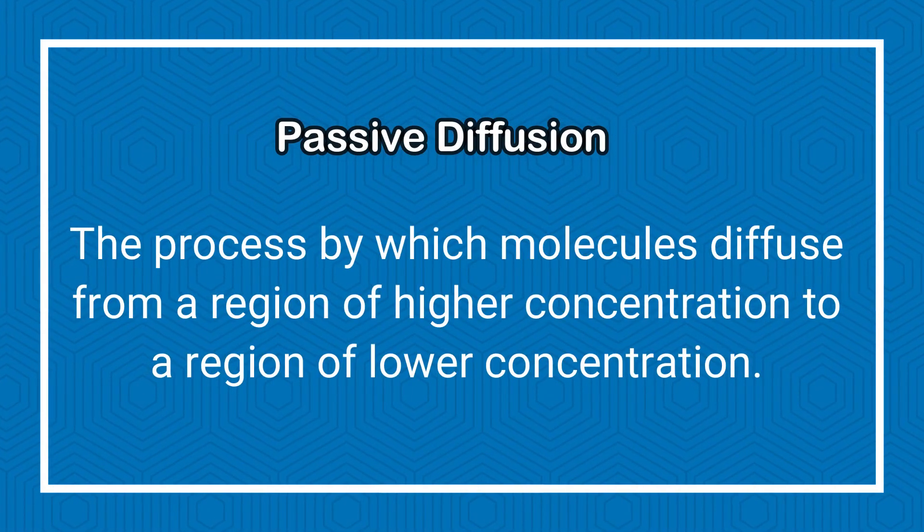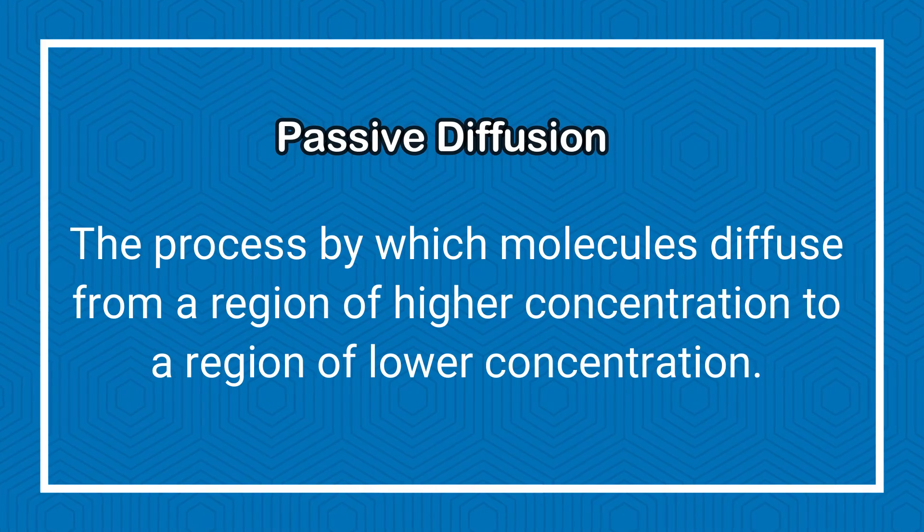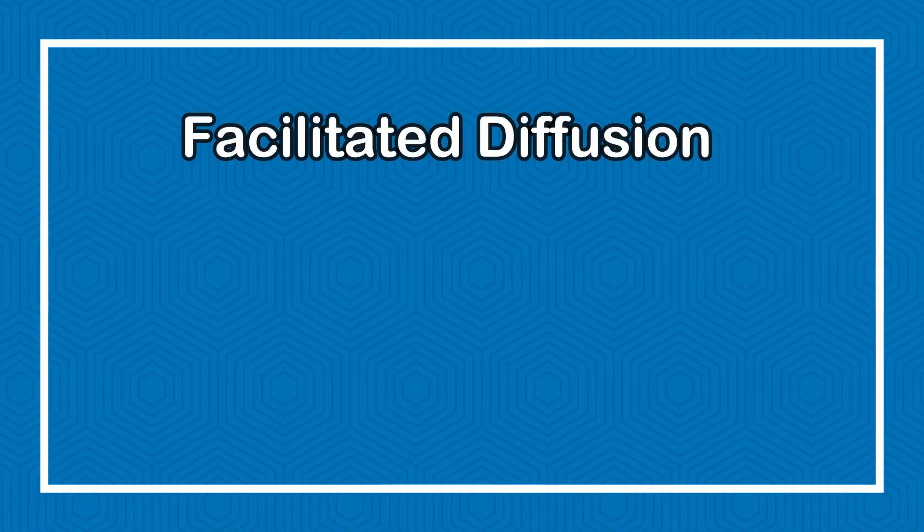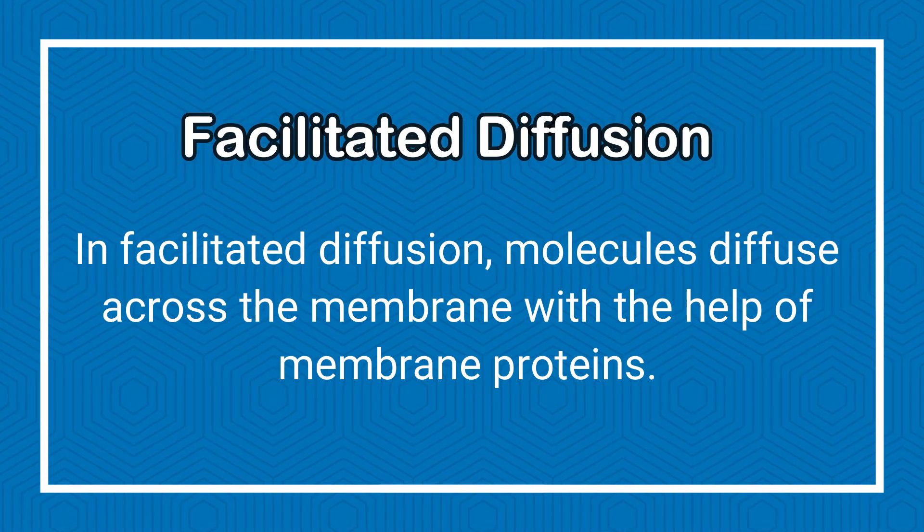Passive diffusion is a process by which molecules diffuse from a region of higher concentration to a region of lower concentration, and it is the most important mechanism for passage of drugs through membranes. Facilitated diffusion is also a kind of passive movement, with the exception that molecules bind to a specific protein that aids in their movement across the membrane. The next method is active transport, where movement of molecules across the cell membrane requires energy.